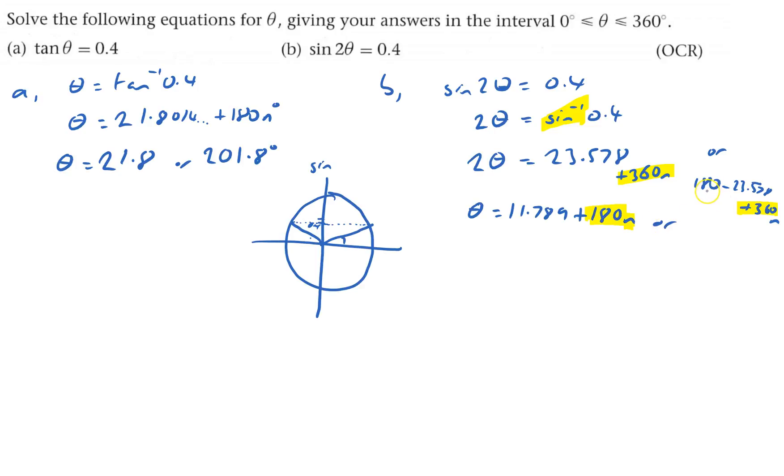So or 180 minus 23.78, divide that by 2, which is 78.21. And that repeats every 180n degrees as well. And now we can work out. And we sort of fluctuate between one and the other. So theta equals.